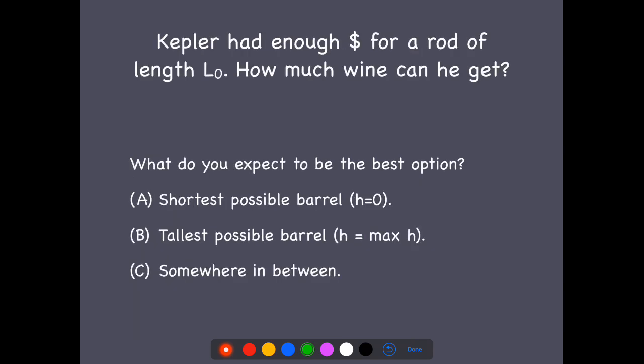But here I am going to say that we're going to fix the price. So Kepler has a certain amount of money in his pocket. That means he can afford a rod length of L₀. And now we want to know how much wine he can get.